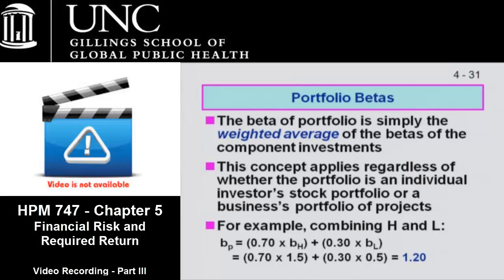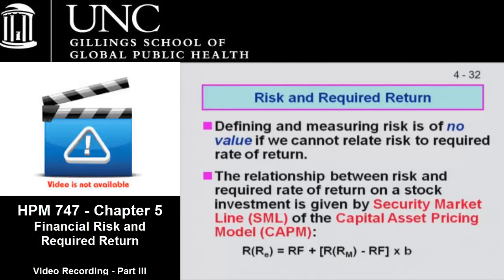Portfolio betas, whether corporate betas or market betas, are weighted averages of the betas of the individual components. You can find the beta for every single project or investment asset that you're managing. Now, how do we put all this together? We've got these seemingly disparate issues: expected rate of return and different measures of risk. How do we put this together so that we have a tool for decision making? That was done in the 1970s by Richard Roll and a few other researchers who came up with the capital asset pricing model.